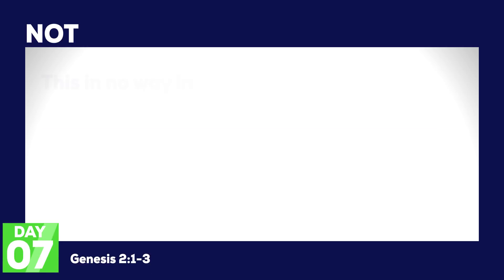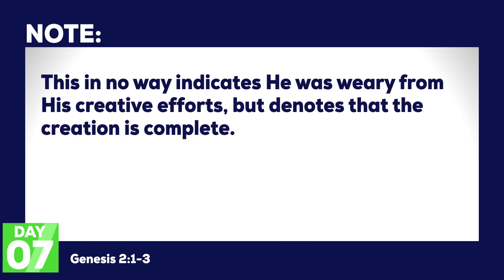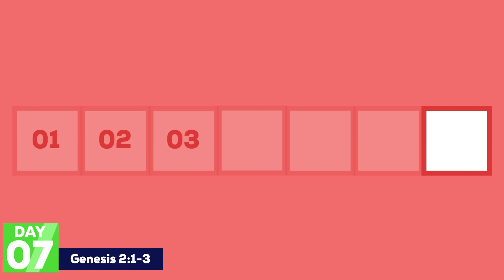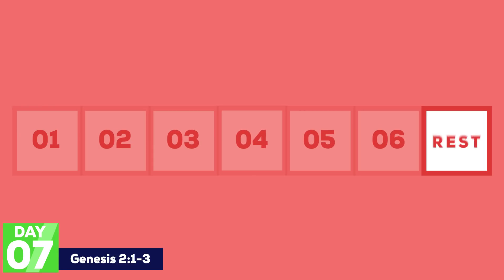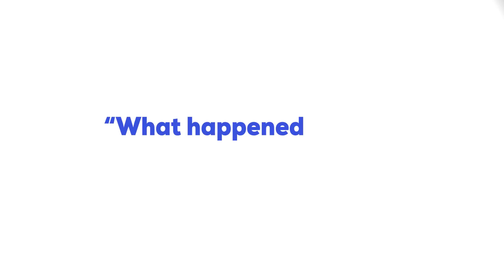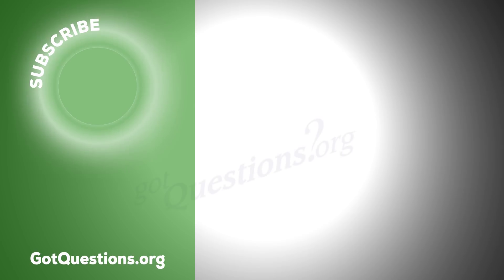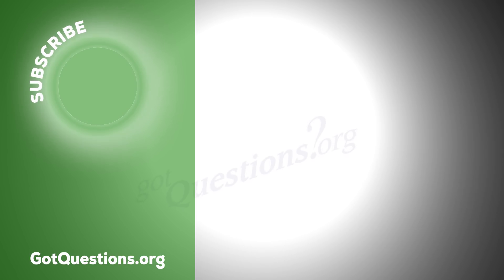God rests. This in no way indicates that God is weary from his creative efforts, but denotes that the creation is complete. Further, God is establishing a pattern of one day in a week to rest. That answers the question: what happened on each day during creation? Research this question further on our website, gotquestions.org. Be sure to click subscribe and check out these other questions.